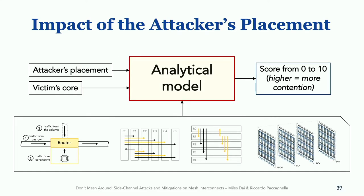The analytical model takes as input all the information we learned in the first part of this talk, including the priority arbitration policy, the lane scheduling policy, and the different flows in different rings. It also takes as input a victim's core and an attacker's placement. It computes the number of links that are shared between the victim and the attacker under each different placement.